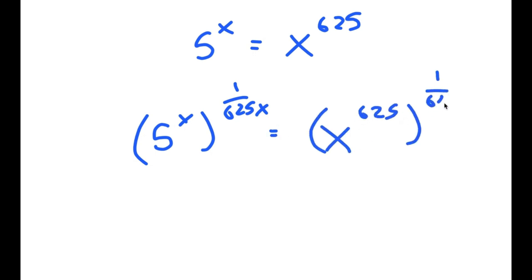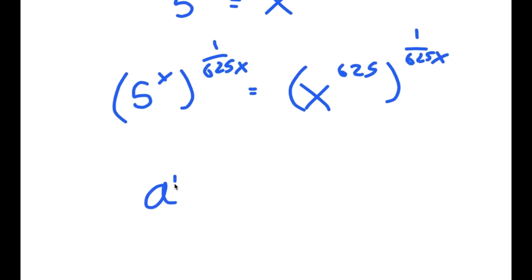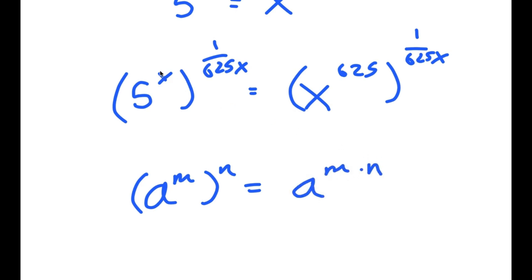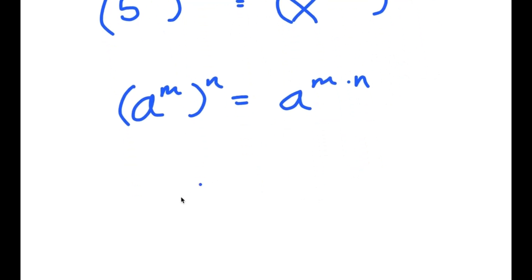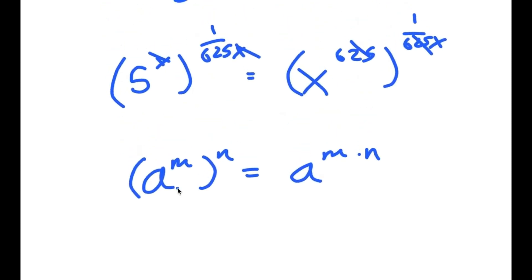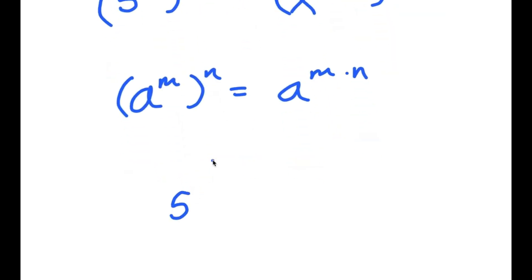The reason I'm doing this is because a to the power of m to the power of n is equal to a to the power of m times n. So these two multiply and cancel out, and these two multiply and cancel out. Now I'm left with 5 to the power of 1 over 625 is equal to x to the power of 1 over x.